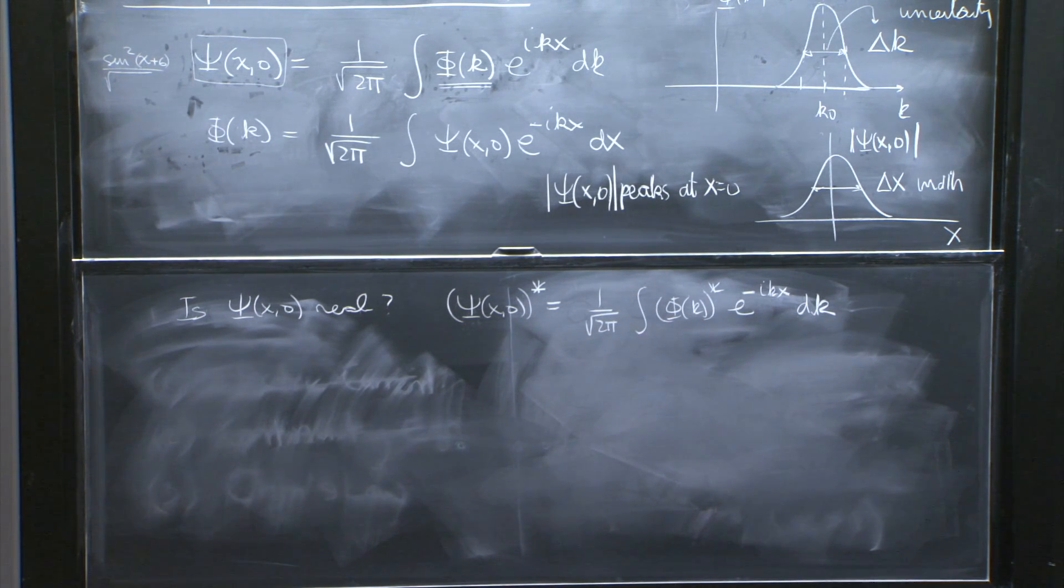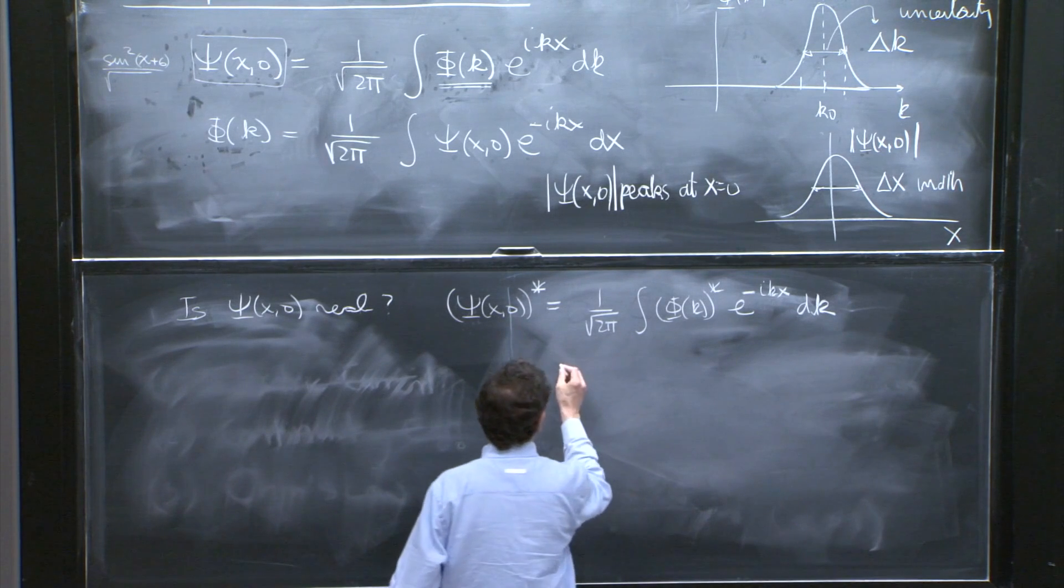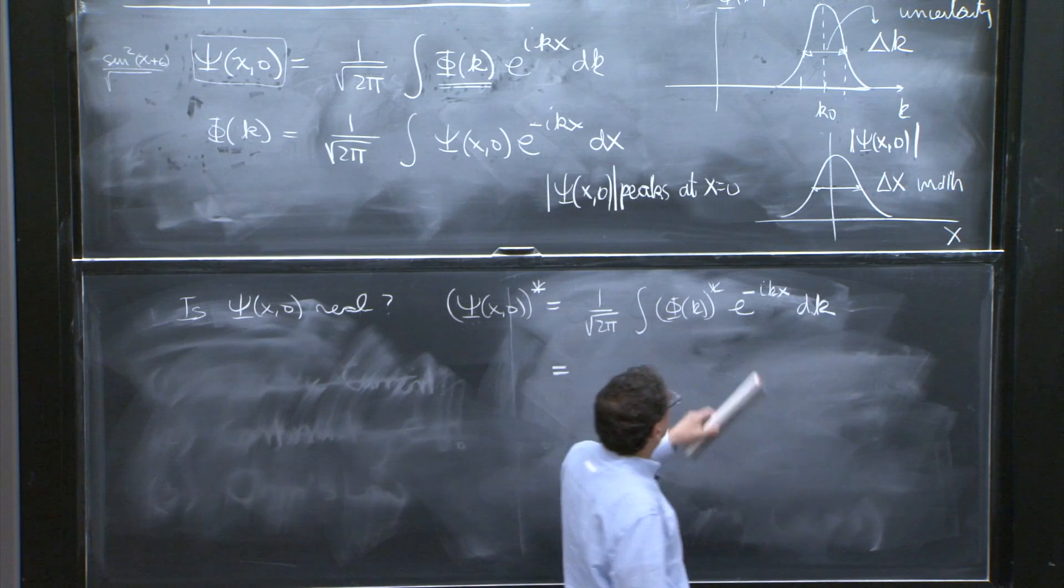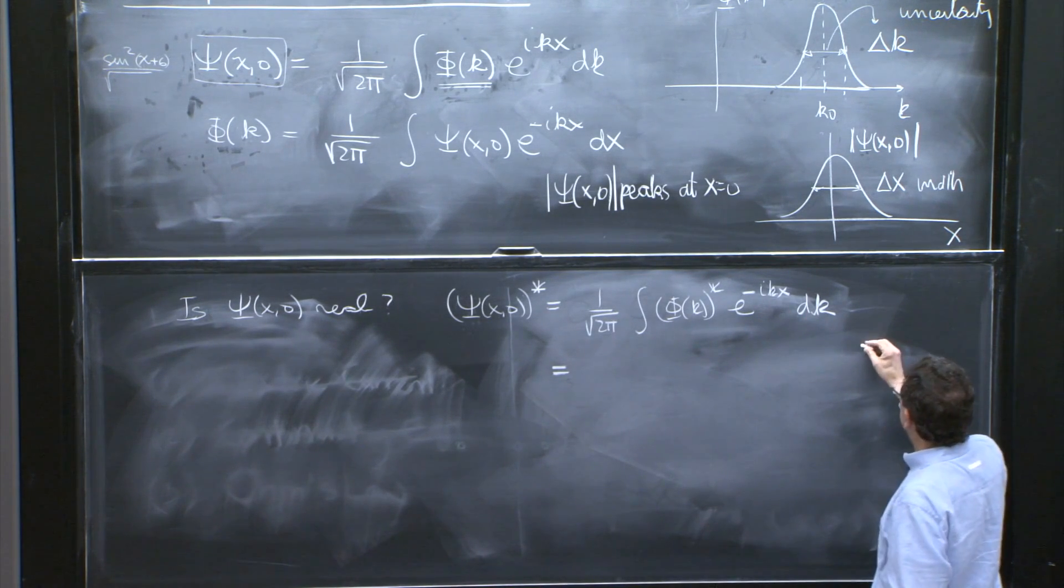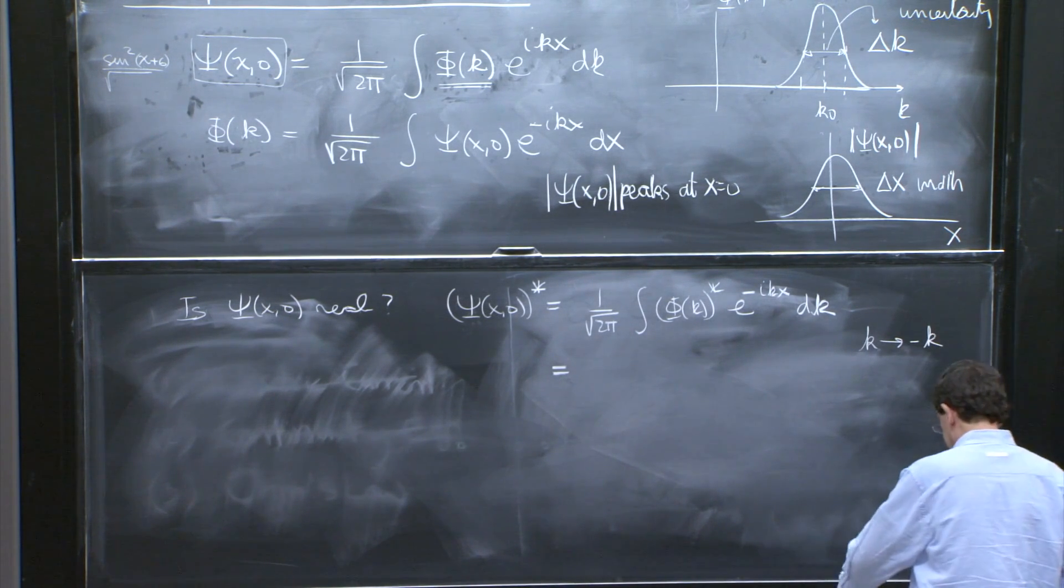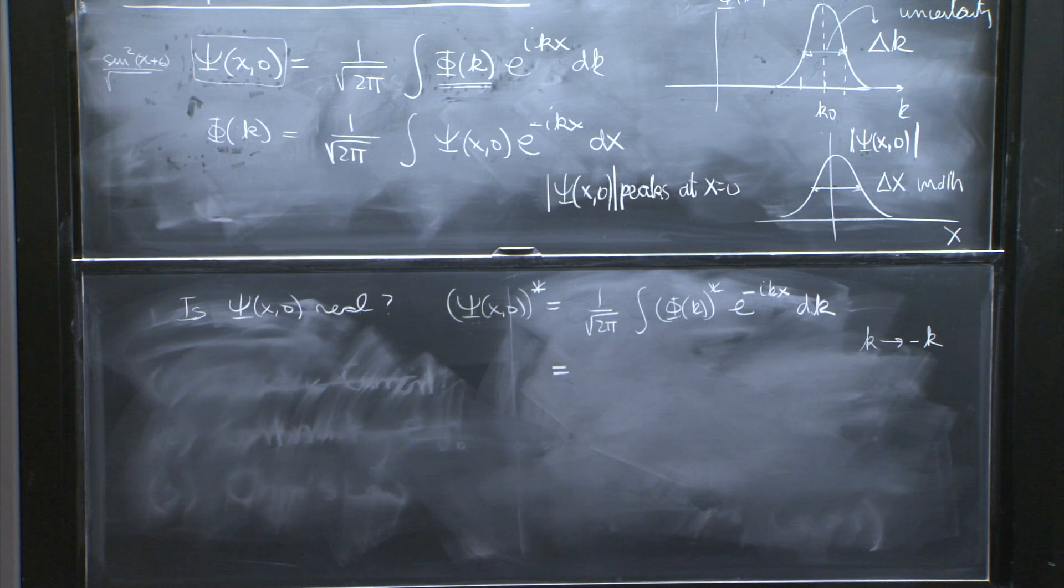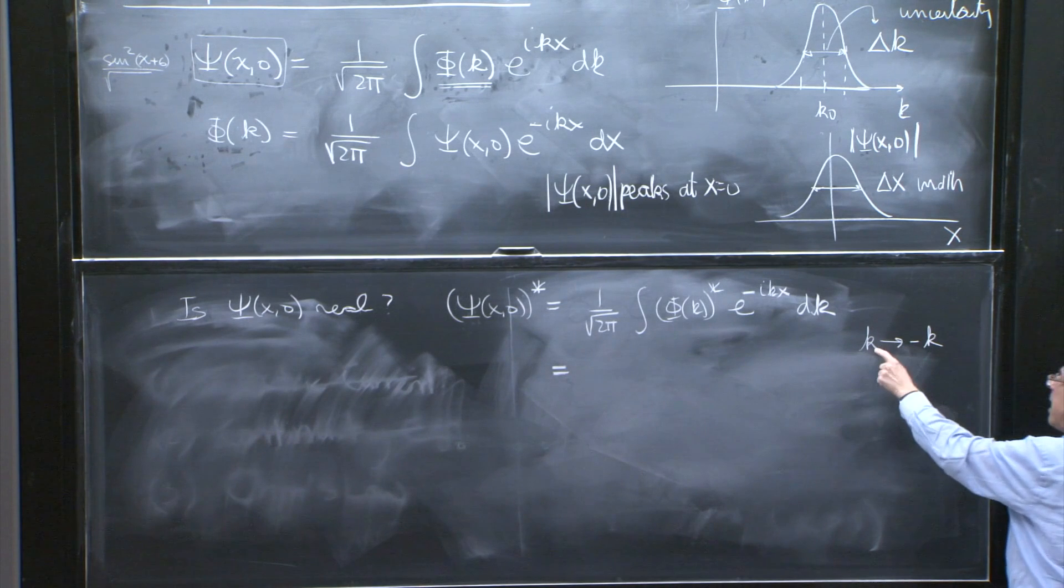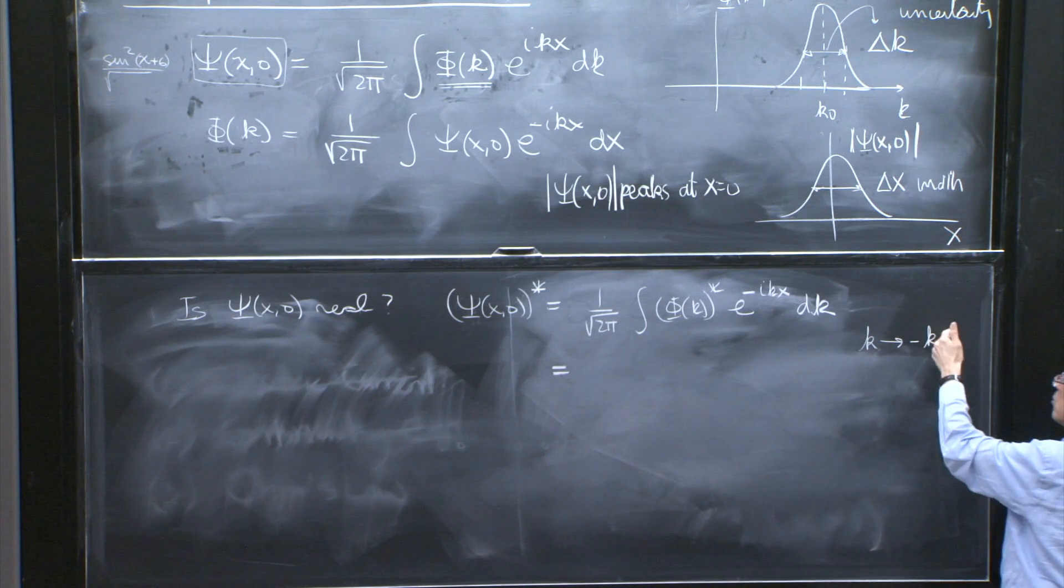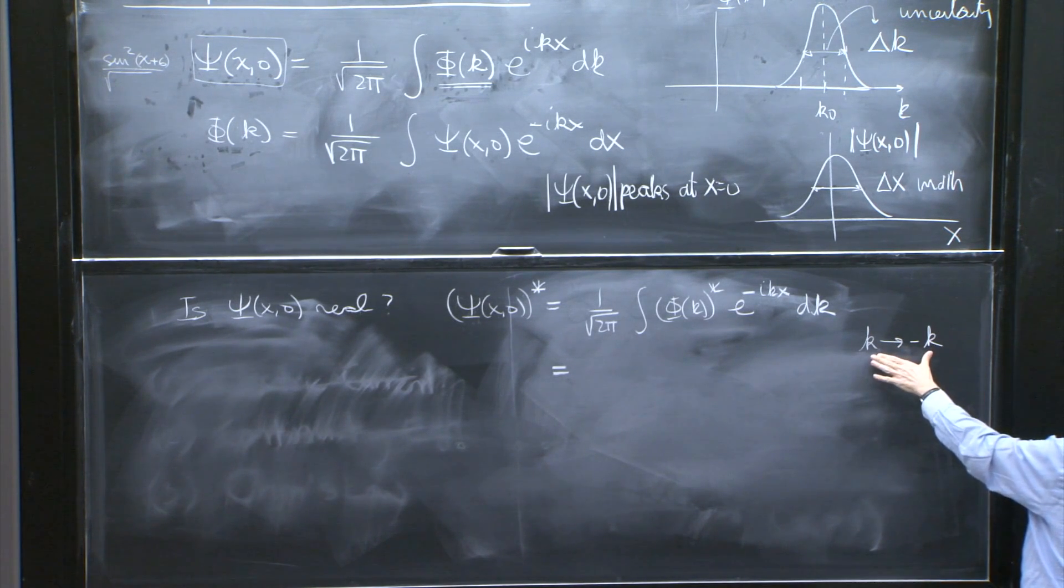You want to compare this with psi of x and 0 to see if it's real. Or let's consider what is the condition that this be real. So I want to simplify here a little more. So what I'm going to do is change variables by changing k to minus k. If you prefer to go a little more slowly, you could say you're going to change k prime equals to minus k. But it's possible to do it this way.